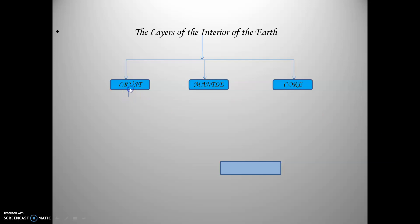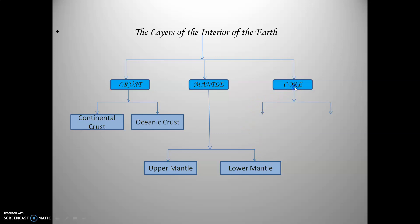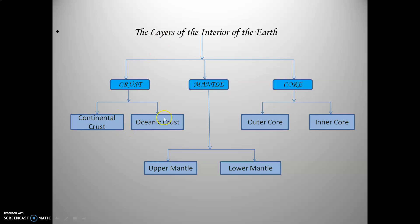The crust is further divided into two important parts: continental crust and oceanic crust. The mantle is also divided into two parts: upper mantle and lower mantle. Moving towards the core, it is further divided into outer core and inner core. These are the three main layers — crust, mantle, and core — each further divided respectively.